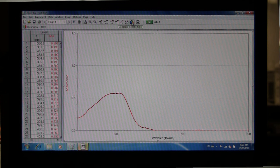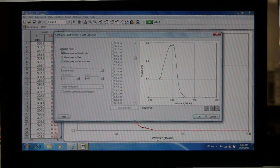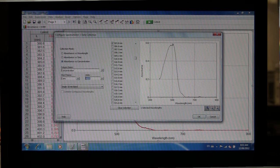To do that we're going to go into Configure Spectrometer. Under Collection Mode we're going to check off Absorbance versus Concentration and change the units to milligrams of iron per 50 milliliters since that is how you prepared your solutions.